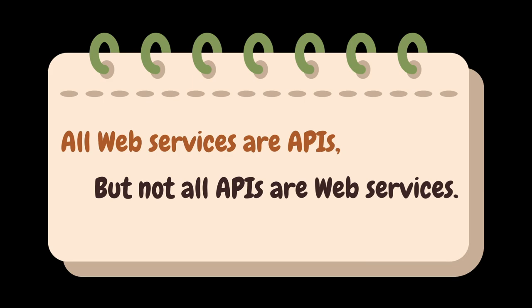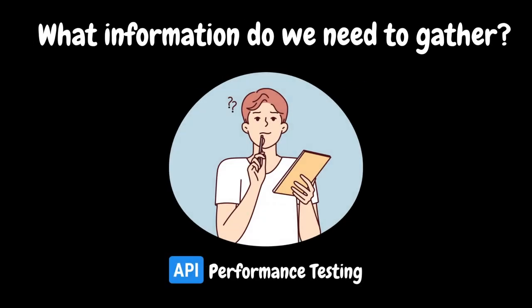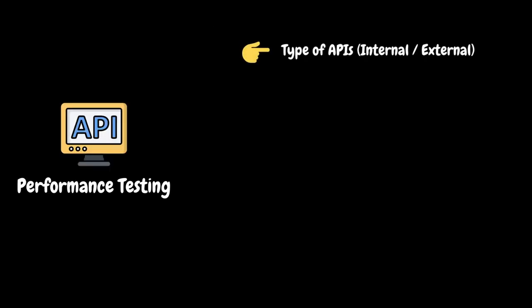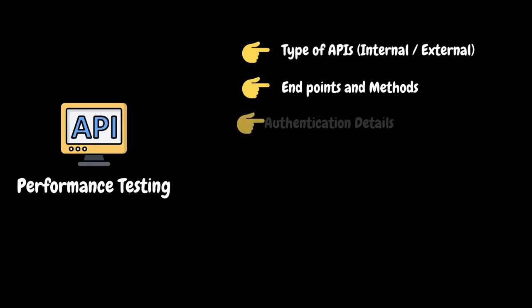After going through all these API basics, you might be thinking: what information do we need to gather for conducting API performance testing? First, we need to determine whether the API is an internal or external API and understand any dependencies. Identify all the API endpoints and methods that need to be tested, and understand the purpose and functionality of each endpoint. If it is SOAP API testing, gather the WSDL file if available. You also need to determine the authentication mechanism used by the APIs, which may include API keys, OAuth tokens, or JWT (JSON Web Tokens).